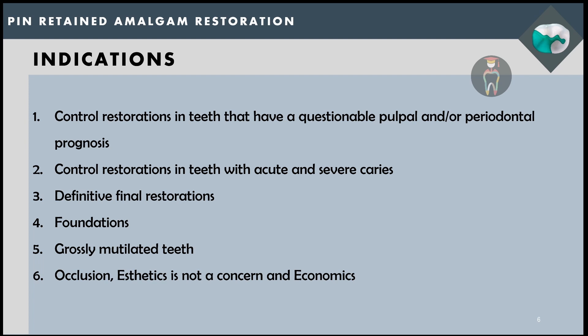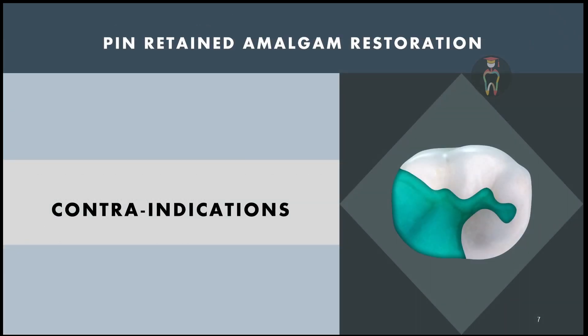Pin retained amalgam restoration can also be used as a definitive final restoration — it is long lasting if done properly. In root canal treated teeth it can be used as a foundation restoration, on top of which a crown preparation and full coverage restoration can be provided. It is also indicated for grossly mutilated teeth, when there are errors in occlusion, when aesthetics is not a major concern, and when patients cannot afford cast metal restorations.